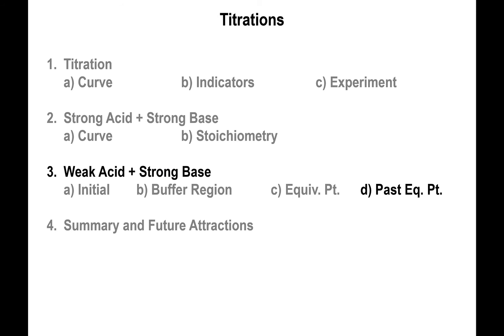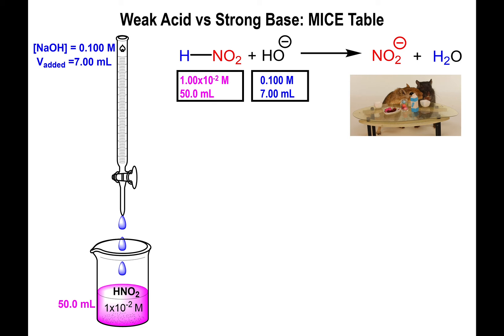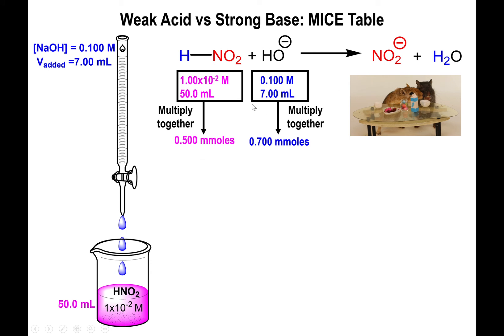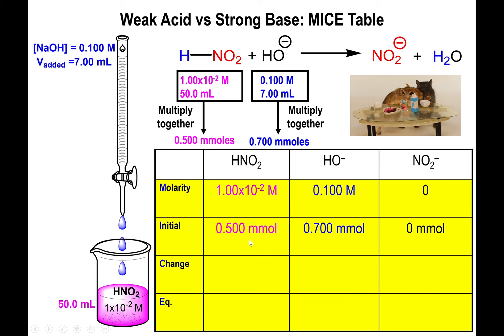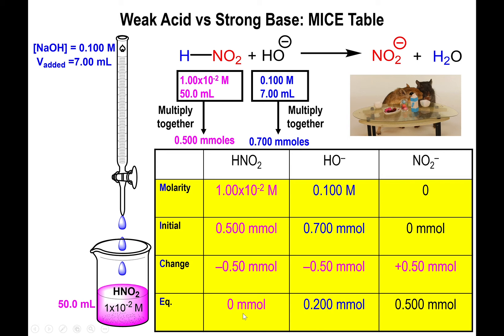That's how you pick indicators based on the equivalence point pH. Now for the calculation past the equivalence point: adding 7 mL total gives 0.7 millimoles of hydroxide. You still start with 0.5 millimoles of acid. Applying the MICE table, the limiting reactant is now HNO₂ — subtract 0.5 from both reactants and add 0.5 to the product. At the end, there is no conjugate acid left, so this is still not a buffer.